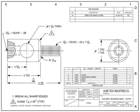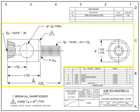Conventional parts of a drawing include the title block, the revision block, the notes list, the field of the drawing, and the list of materials or parts list.